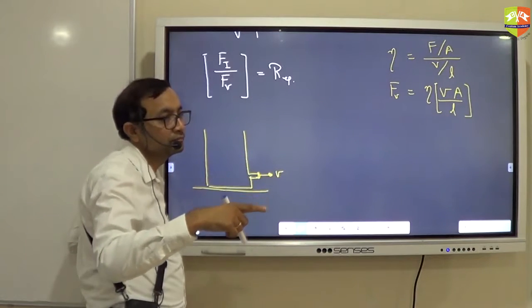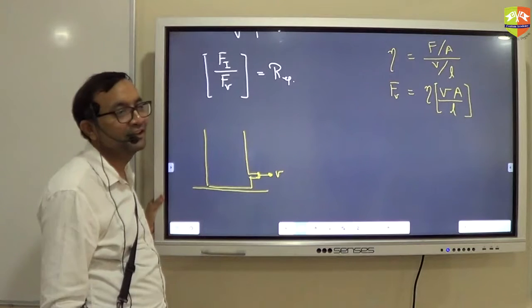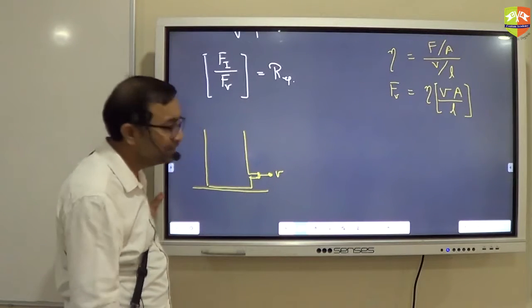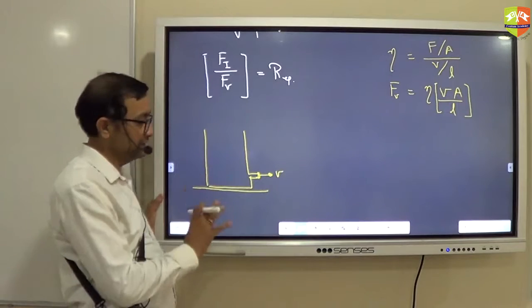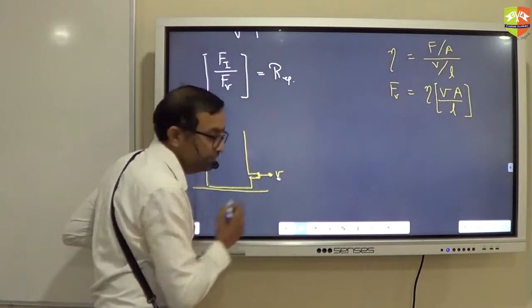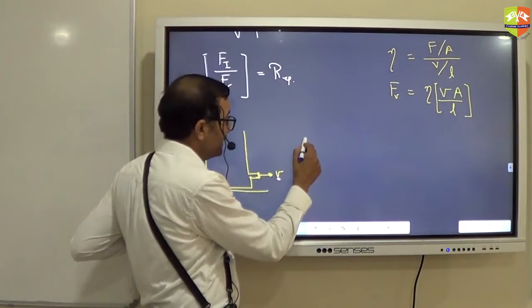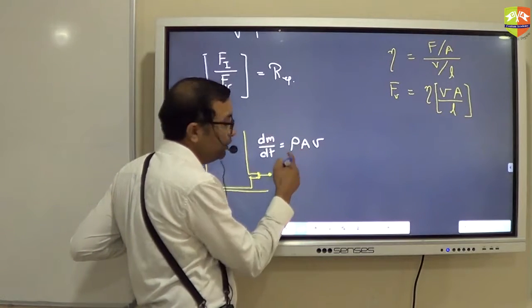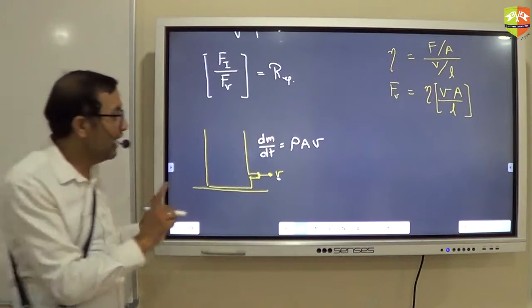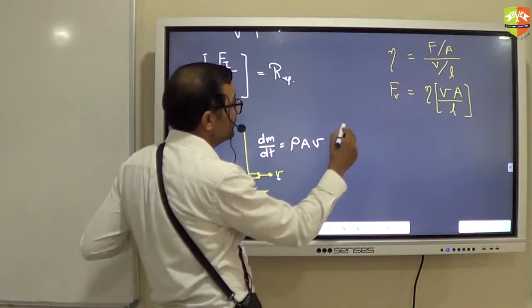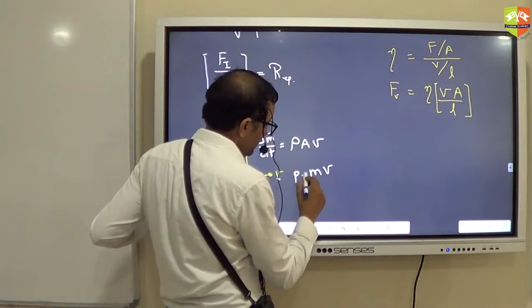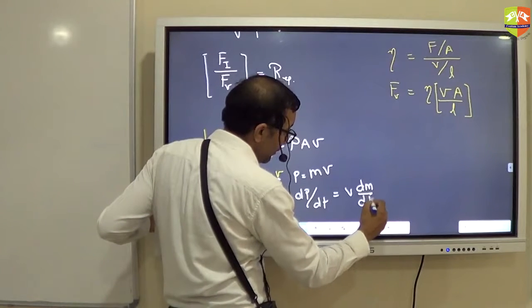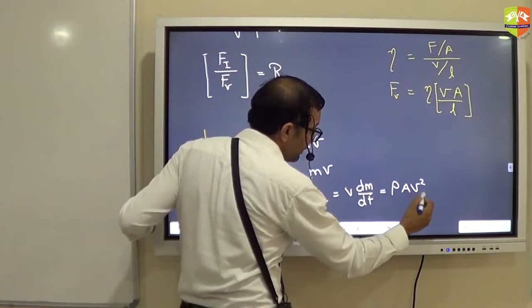So let us see what it is. If you take a beaker like this, at this instant let's say velocity is V. The rate of flow is A into V. DM by DT is what? Rate at which mass is coming out will be rho into A into V. This you know, right? And rate of change of momentum is what? If velocity is constant, momentum is M into V. So rate of change of momentum is V into DM by DT. So this will be rho A into V squared. This we haven't done.